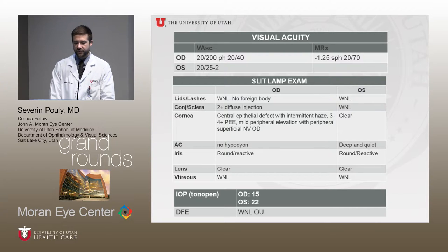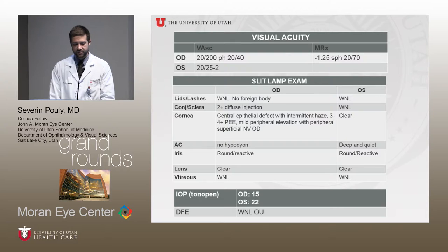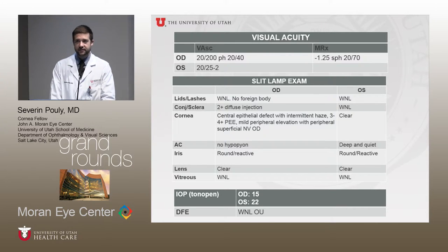She had mild peripheral elevation in the cornea with superficial neovascularization extending from the limbus. She did not have a hypopyon, and the rest of her anterior segment exam was normal. Her pressure was slightly lower in the right eye compared to 22 in the left eye, and the dilated exam was normal on both sides.